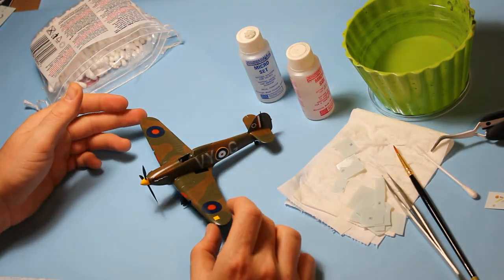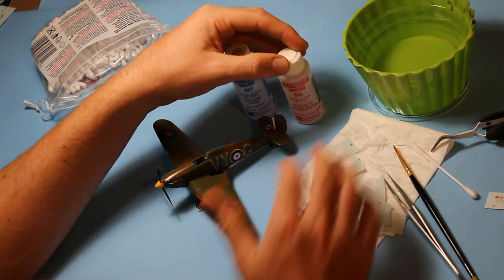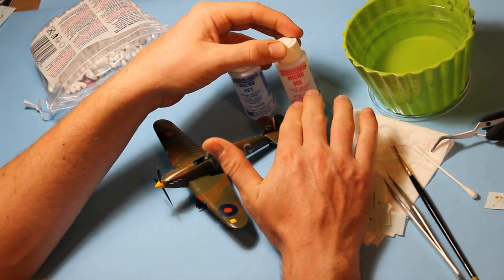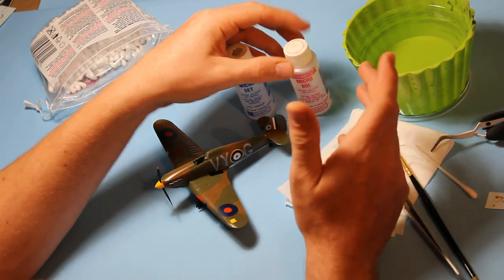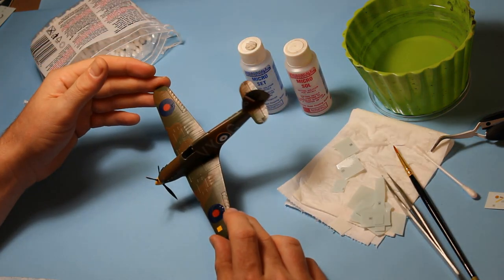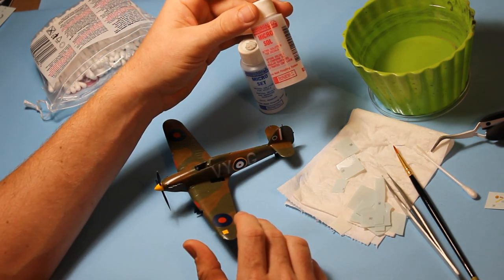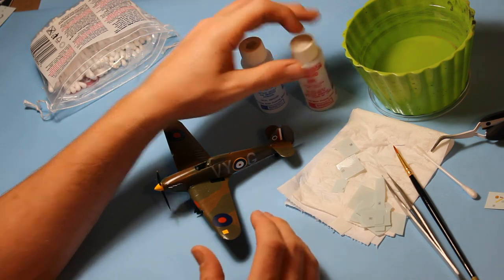That there is everything apart from the tail and the fins. It has had two coats of micro-set and two coats of micro-sole. With a further coat of micro-sole, as a rule, tend to work in three. Obviously if the decal still needs more, then it can have more coats. You can have as many coats of this as you want really, until you get to the finish that you want.